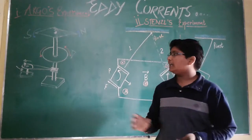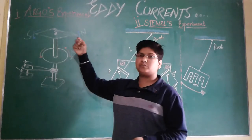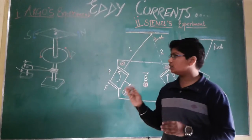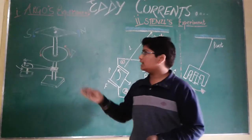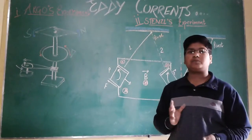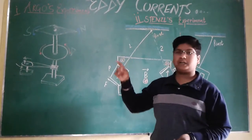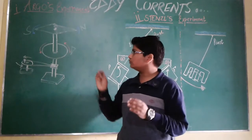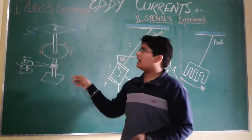According to Lenz's law, the direction of this induced current is such that the magnetic field from the magnetic needle always opposes the motion of this metallic disc. As a result, a couple acts on this metallic disc so that it retards in motion. And according to Newton's third law of motion, an equal and opposite force acts on the magnetic needle also. So the magnetic needle starts to rotate in the same direction as the metallic disc. This was all about Arago's experiment.